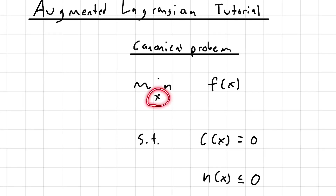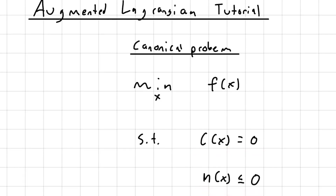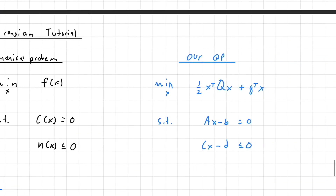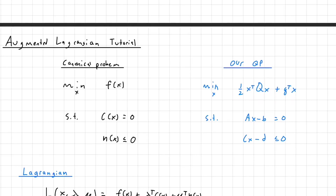We're minimizing over some value x. The objective function is f, we have an equality constraint function c(x), and an inequality constraint function h(x). To map this to the QP we are given: here we have x, here's our quadratic cost function, here's our linear equality constraint, and here's our linear inequality constraint.